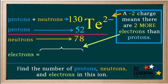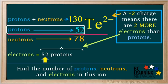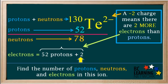So to find the number of electrons, we take 52 protons and add 2, which gives us 54 electrons. 54 negative electrons and 52 positive protons add up to a net charge of negative 2, which is the charge on the ion.